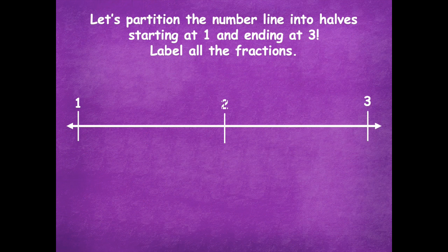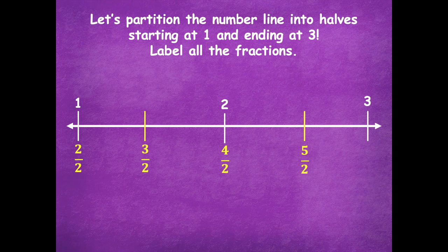I need to label my missing whole, which is two. So now my number line has all the wholes: one, two, and three. From one to two, I'm going to split that in half, and from two to three I'm going to split that interval in half also. Now I need to label all of those. Instead of starting at zero halves, we start at one, so we need the fraction that represents one when talking about halves, which is two halves. Then: two halves, three halves, four halves, five halves, and six halves.